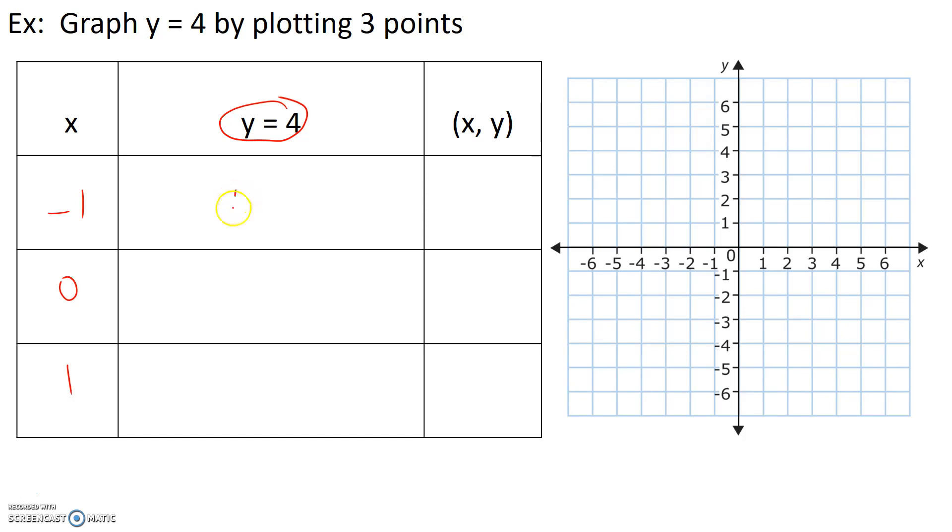So when x is negative 1, the value of y is 4. When x is 0, the value of y is 4. When x is 1, the value of y is 4. So in the ordered pair, we will have negative 1, 4, 0, 4, and 1, 4.